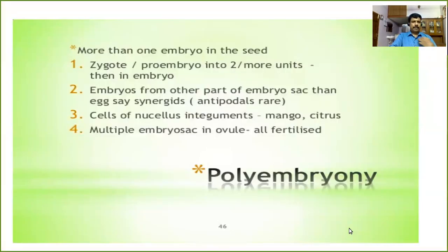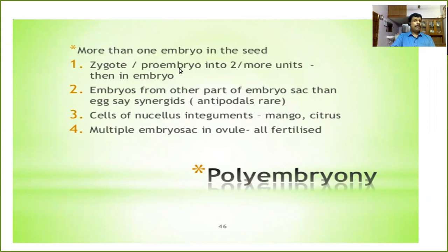One more concept is polyembryony — the occurrence of more than one embryo in a seed. Polyembryony occurs because of various reasons. First, the zygote or proembryo may divide to form more embryos.